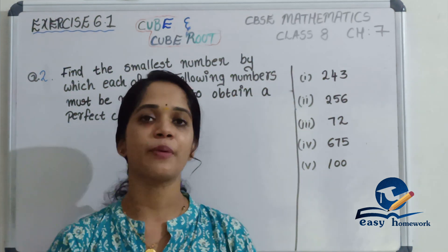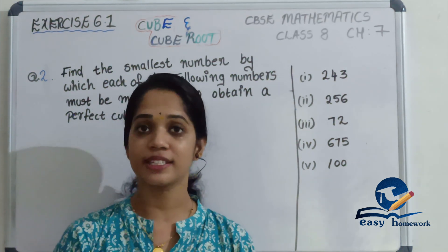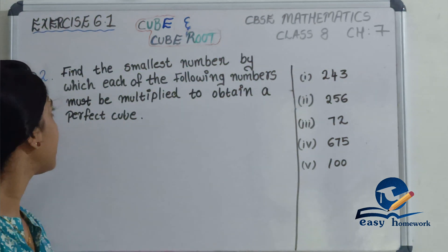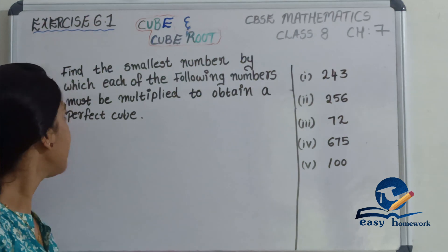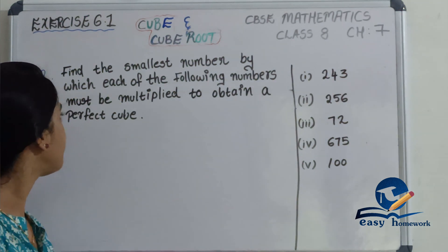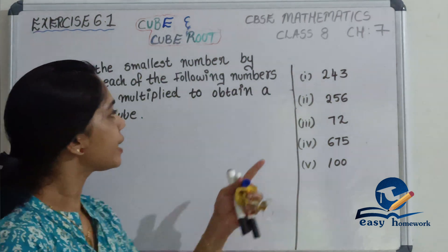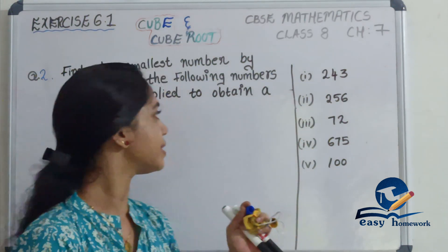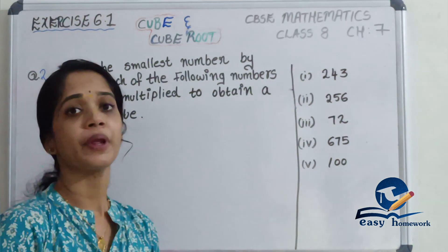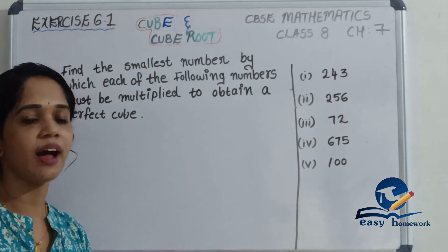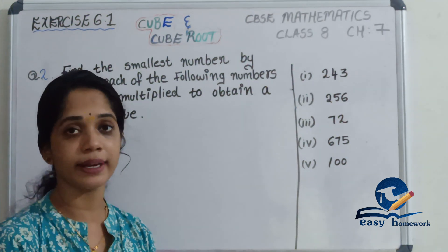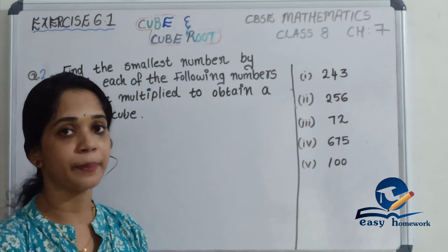When you look at the first level of quiz 2 in the class, I will give 10 during the last exam. By which each of the following numbers must be multiplied to obtain a perfect cube? This is the number we have explained in the perfect cube. The smallest multiplier.